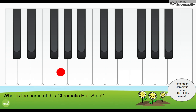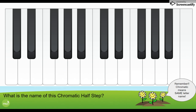Here we're starting on G and going to the very next black key. Remember to use the same letter name — it's going to be G sharp. Now let's try a C to the very next black key — that's C sharp.